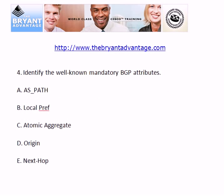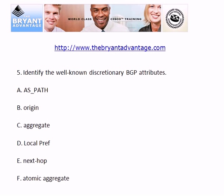Question 4 covers the BGP attributes. They all do different things and we need to know what they do. We should also probably know which ones are mandatory and which ones are discretionary. From this list, identify the well-known mandatory BGP attributes, and then from this list identify the well-known discretionary BGP attributes.